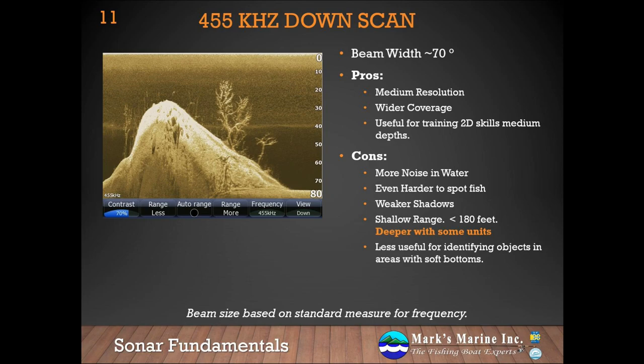Next, the 455 kilohertz downscan beam has a beam width of approximately 70 degrees, medium resolution, and a wider coverage area — pretty comparable to our 83 kilohertz for beam width. Because of the wider beam, just like with 83 kilohertz, we have more noise in the water and it's very hard to spot fish. That's one reason why the Fish Reveal capability from Lowrance is so cool. It's still shallow-ranged — approximately 150 feet is about as deep as I would go, though manufacturers claim much deeper. If a manufacturer tells you 300 feet, I'd round down by about two.